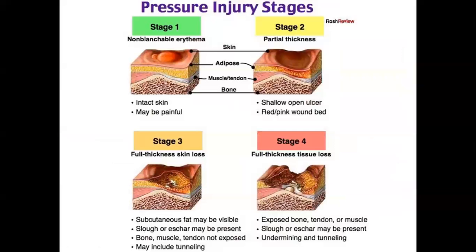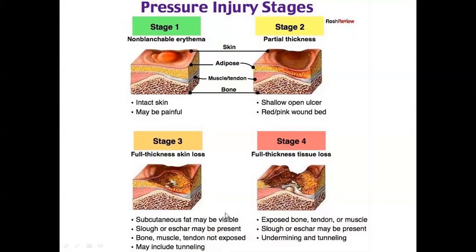Now, in the first picture: stage 3 is called full thickness skin loss, while stage 4 is full thickness tissue loss — don't miss it during the board exam. Stage 4 is tissue loss; stage 3 is skin loss. In stage 3, subcutaneous fat may be visible, and slough or eschar may be present. In stage 4, bone, muscle, and tendon are not exposed in stage 3, but in stage 4, bone, muscle, and tendon are exposed.